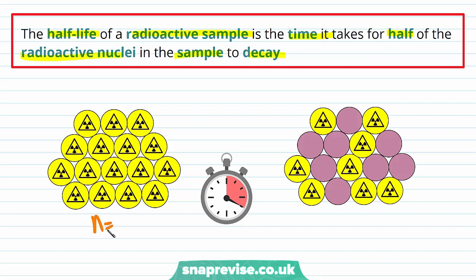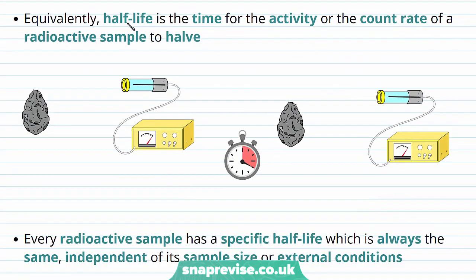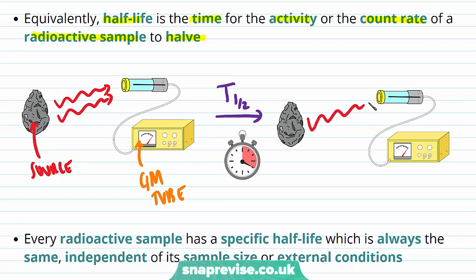So if we start with n equals 16 nuclei, and a half-life of time goes past — which we can represent by a small t subscript half, or a capital T subscript half — there will be 8 radioactive nuclei left, because half of the radioactive nuclei will have decayed. We can equivalently say that half-life is the time for the activity or the count rate of a radioactive sample to halve.